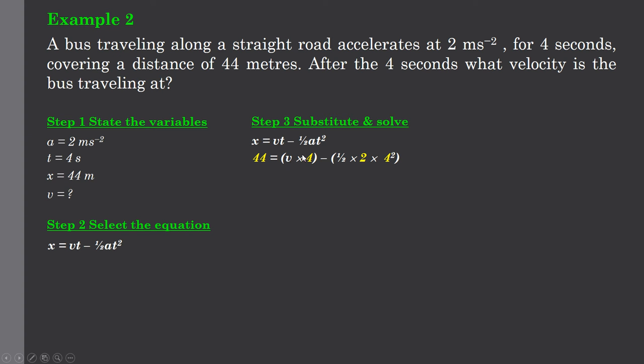v is the unknown, we leave that in. t was 4 seconds. Half times a, these equations are half at squared, there's really an invisible multiplication between the half and the a and the t. So half at squared is the same as a half times a times t squared. So it's a half of 2 for the acceleration times 4 squared. That square is just on the t, the time for 4. Let's expand that.